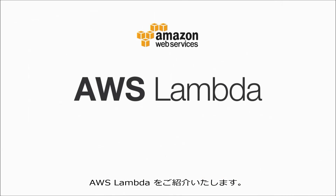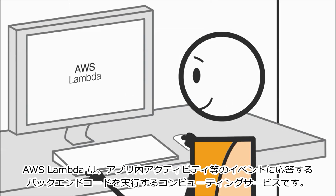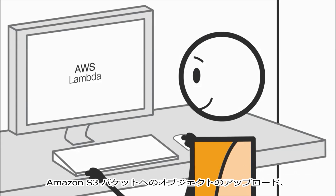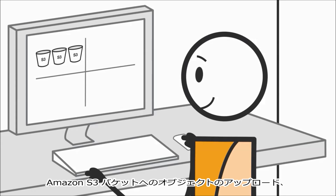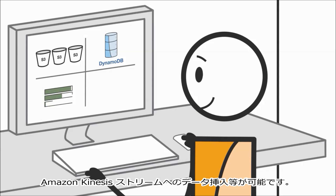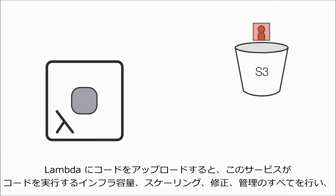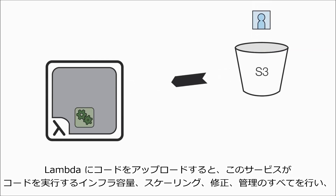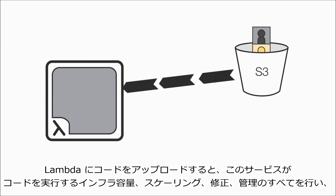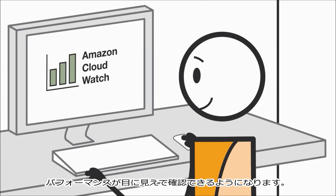Introducing AWS Lambda. AWS Lambda is a compute service that runs your back-end code in response to events such as object uploads to Amazon S3 buckets, updates to Amazon DynamoDB tables, data in Amazon Kinesis streams, or in-app activity. Once you upload your code to Lambda, the service handles all the capacity, scaling, patching, and administration of the infrastructure to run your code, and provides visibility into performance by publishing real-time metrics and logs to Amazon CloudWatch.